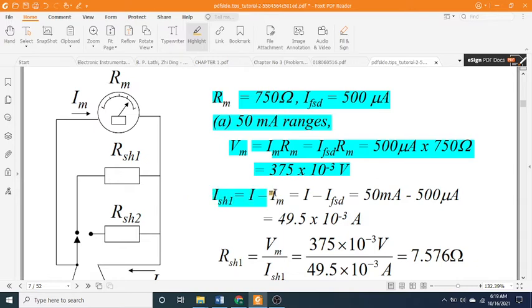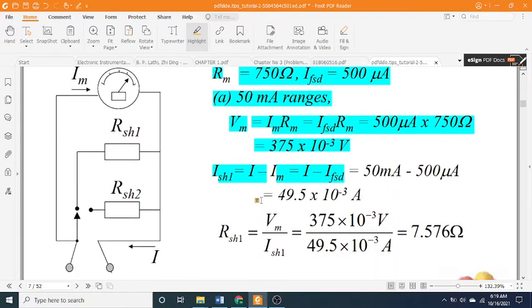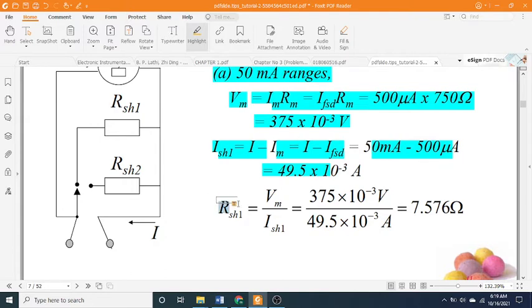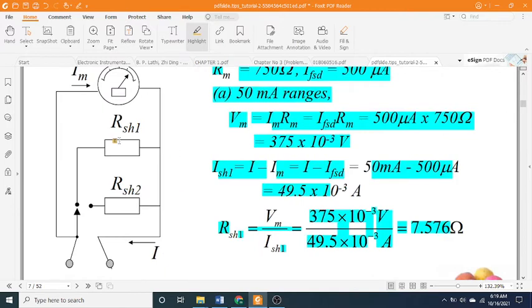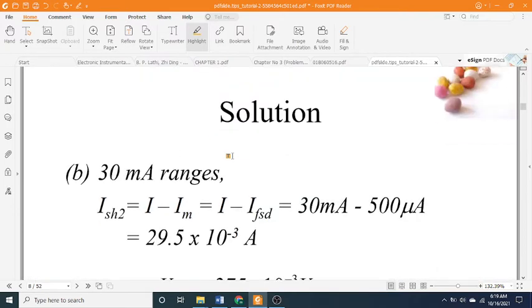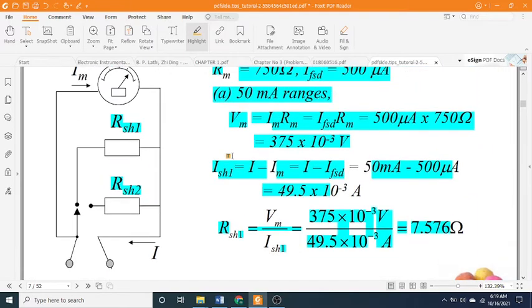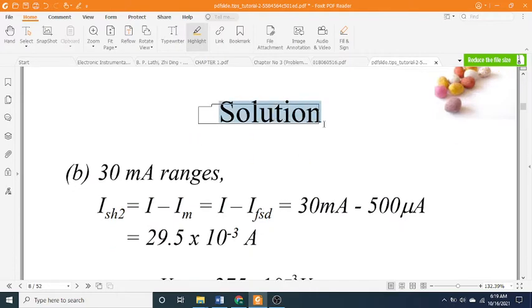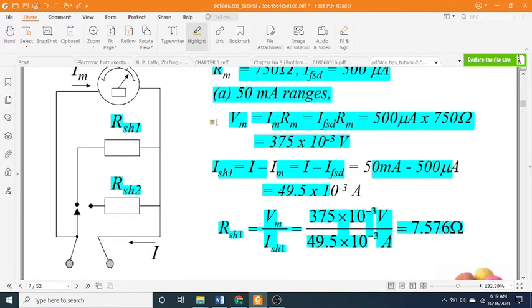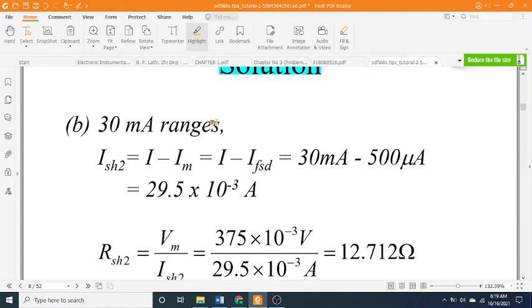Ish1 equals I minus Im equals I minus FSD equals 50 milliamps minus 500 microamps equals 49.5 times 10 to the minus 3 amps. Rsh1 equals Vm divided by Ish1 equals 375 times 10 to the minus 3 volts divided by 49.5 times 10 to the minus 3 amps equals 7.576 ohms.